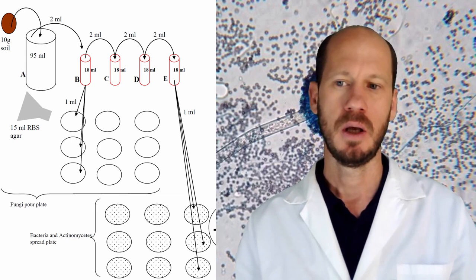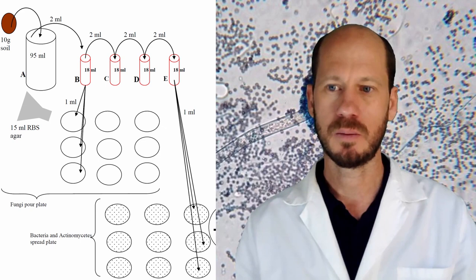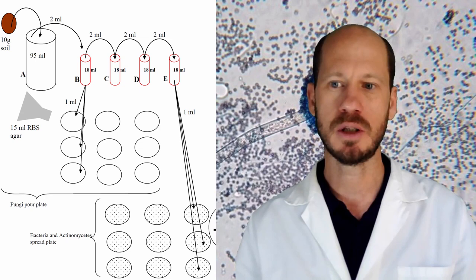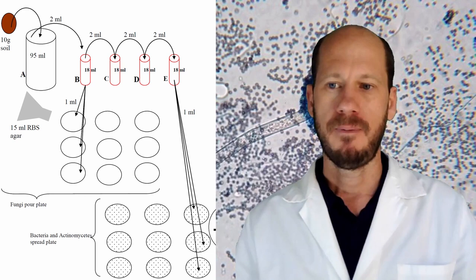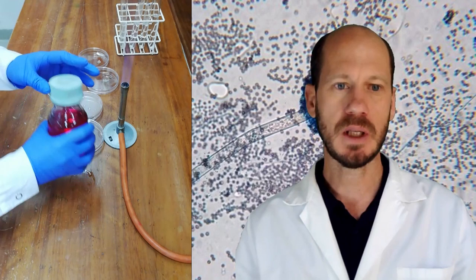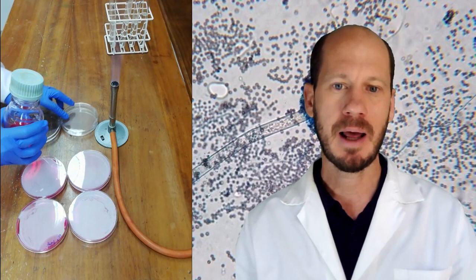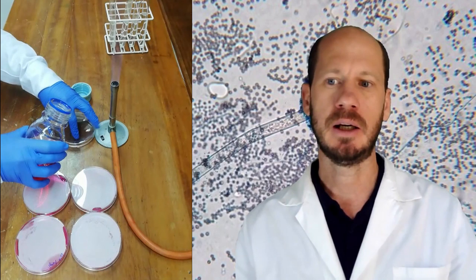Next we will transfer those suspensions into the plates. We will use the first three dilutions — bottles B, C and D — for fungi, and the last three dilutions — bottles C, D and E — for bacteria and actinomycetes. For the fungi we will use the pour plate method, which means we are going to add 1 mL of the suspension to the plate first, then add the rose bengal agar warm before it solidifies, and mix that in the plate and allow it to solidify. After solidifying, we will cover it, allow it to dry a little bit, invert it and keep it in the incubator for a few days before we count the number of colonies.